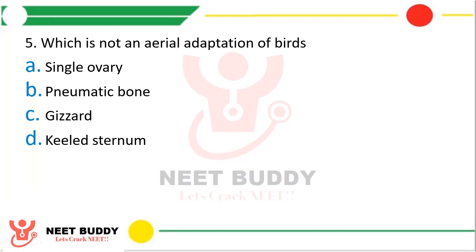Question fifteen: which is not an aerial adaptation of birds? Option A, single ovary; option B, pneumatic bone; option C, gizzard; or option D, keeled sternum? The correct answer is option C, gizzard. Gizzard and crop are two additional chambers in the digestive tract — they have no relation with aerial adaptation. Aerial adaptation refers to the adaptations that assist in flying. So gizzard is not an aerial adaptation of birds.